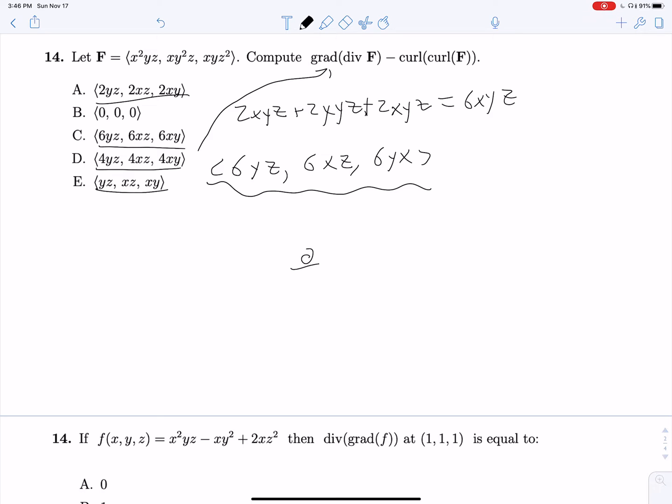So curl of F is going to be del, partial partial x, partial partial y, partial partial z, crossed with x squared yz, xy squared z, xyz squared. And then this is one big old cross product.